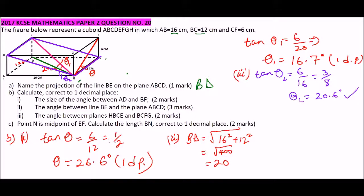But C of the question says point N is the midpoint of EF. So this is where we have EF. So point N is there. And calculate the length BN correct to 1 decimal place. So BN is this line moving from B to N. So that is our BN. Now we know that EF is 16 centimeters. So it means this is 8 centimeters and this is 8 centimeters. And we are required to find BN. So first of all we need to find GN. Since we know GF is 12 centimeters and this is 8 centimeters, we can now use the Pythagoras theorem and say this is part C.